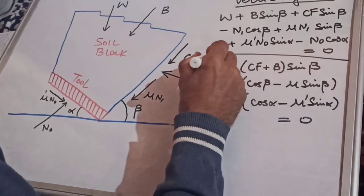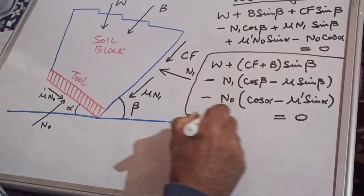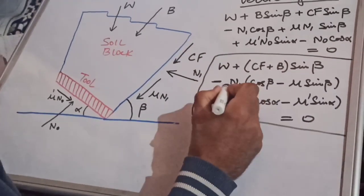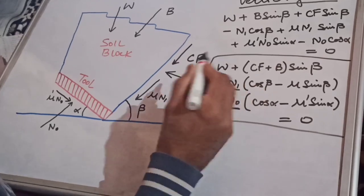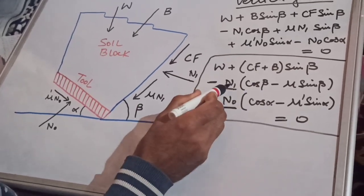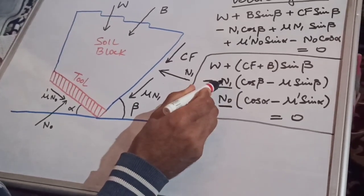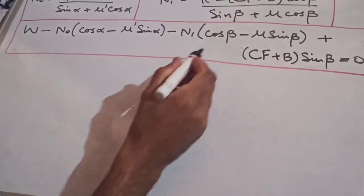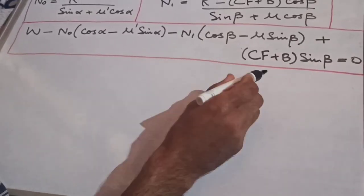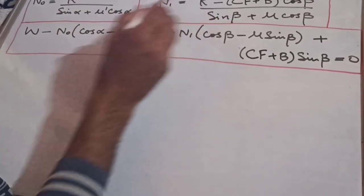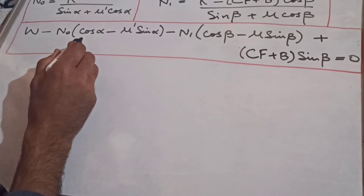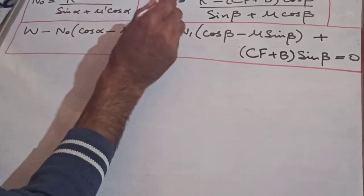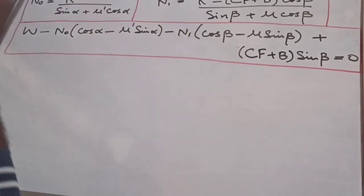We have both the values of N0 and N1 from earlier. We substitute them into this vertical force equation. Substituting N0 = R* / (sin(alpha) + mu-dash×cos(alpha)) and the expression for N1 = [R* − (Cf + B)×cos(beta)] / (sin(beta) + mu×cos(beta)), we place these values into the vertical equilibrium equation.